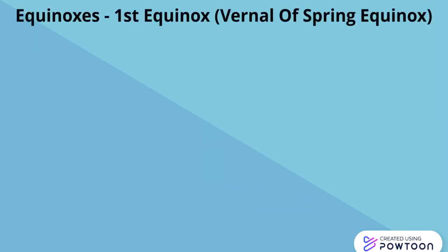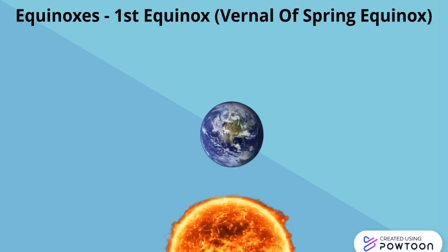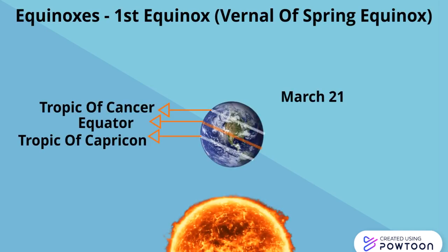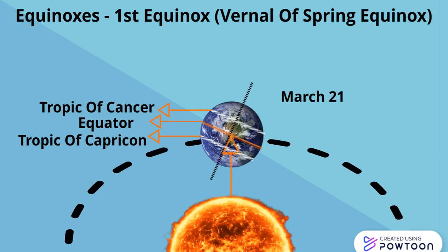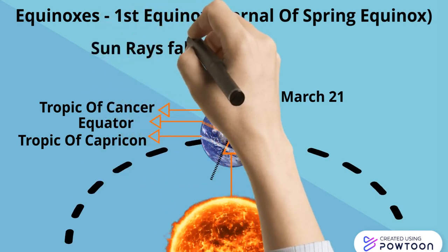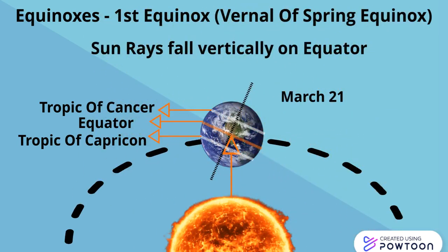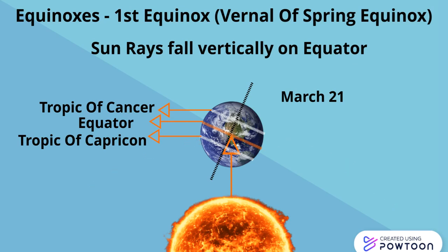Now let's talk about the first equinox, that is also known as the vernal or spring equinox. As you can see in the figure, the sun rays fall vertically on the equator. It marks the arrival of spring in both the Northern Hemisphere and the Southern Hemisphere. That's why it is known as the spring equinox.